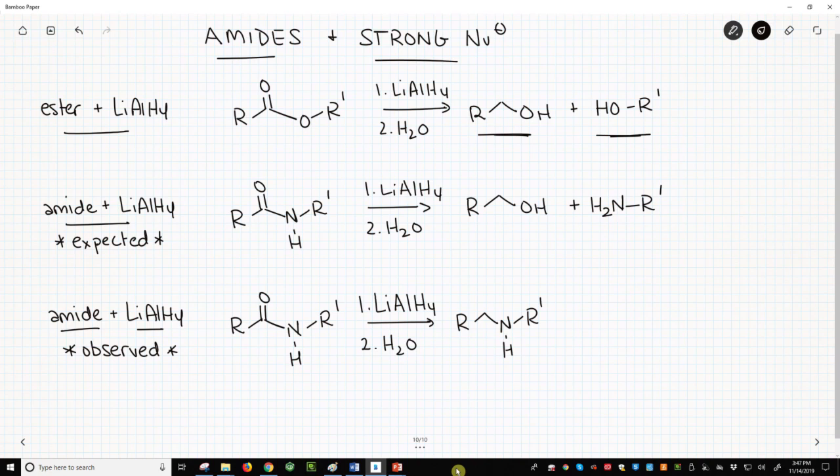If amides do the same thing, then I would expect an amide to make an alcohol and an amine, and that's what we show on the middle line. This is what we would expect. We'd expect an alcohol and an amine. In both cases, we're breaking the CO or the CN bond to the carbonyl.